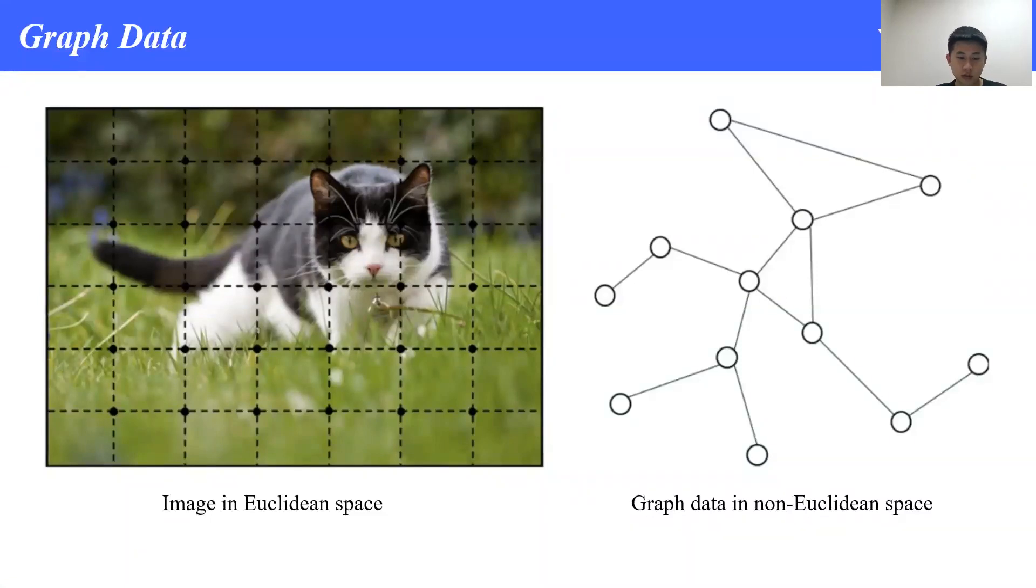Our work mainly focuses on data augmentation in the graph domain. Before getting into details, let's see the difference between graph data and other data like images. As shown in this slide, all pixels in the image are well positioned as a grid, while for graph data on the right side, nodes are connected in a non-Euclidean way. Hence, even if two graphs consist of the same nodes, they may have totally different structures. Therefore, it is often a challenge to deal with graph data, and algorithms for graph data are very different from those for images.